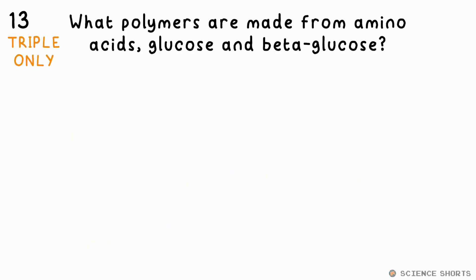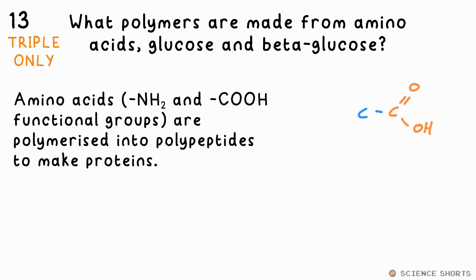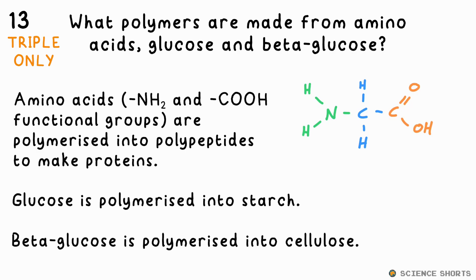Question 13. What polymers are made from amino acids, glucose, and beta-glucose? Amino acids contain an amino functional group (NH₂) and a carboxyl group (COOH). They can be polymerised into polypeptides, which are then used to make proteins. Glucose is made into starch, and beta-glucose is used to make cellulose.